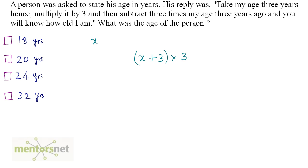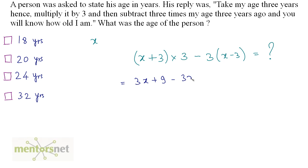Then subtract 3 times his age 3 years ago, which is 3 times x minus 3. So we have 3 times x plus 3, minus 3 times x minus 3: that equals 3x plus 9 minus 3x plus 9. The 3x terms cancel out, leaving 9 plus 9 which equals 18. So the answer is option A — the person is 18 years of age.